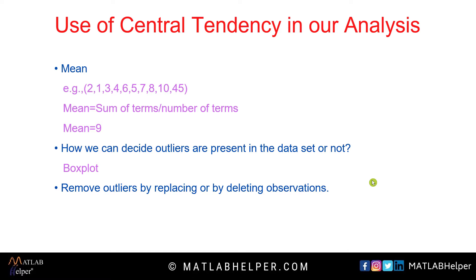We can say such values are outliers for our dataset. Outliers can be maximum or minimum. To decide whether a particular value is an outlier, there are several methods we will cover in upcoming videos. The most common method is with the help of a boxplot. After detecting an outlier, either we have to delete it or replace it — but deleting is not a good option as we will lose information.